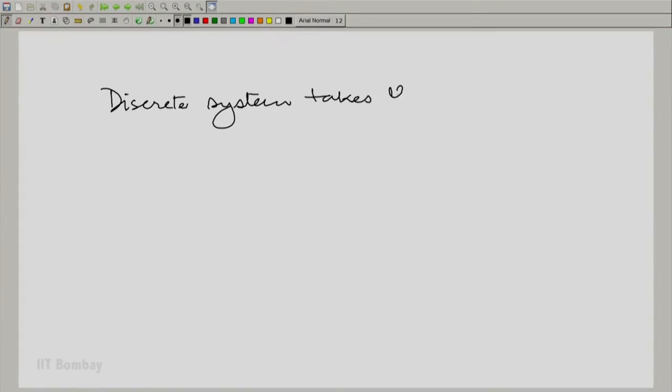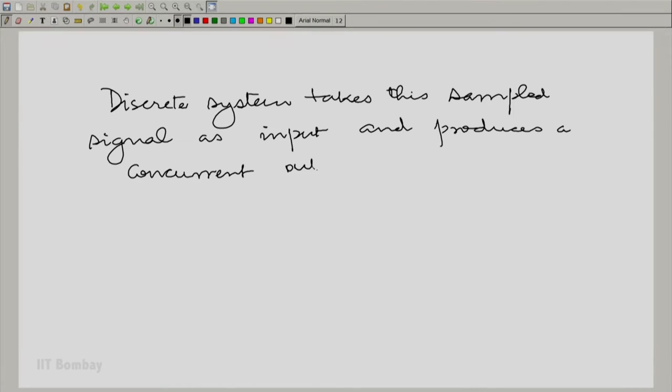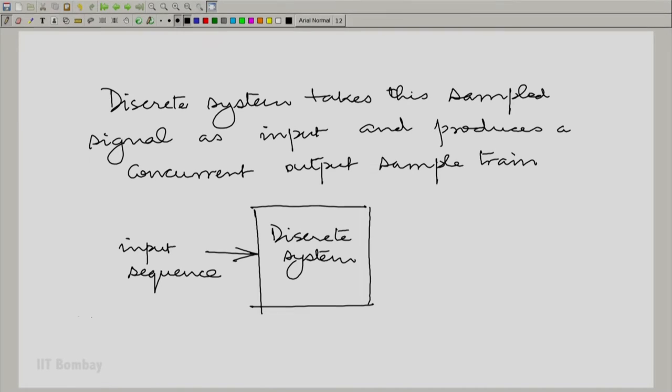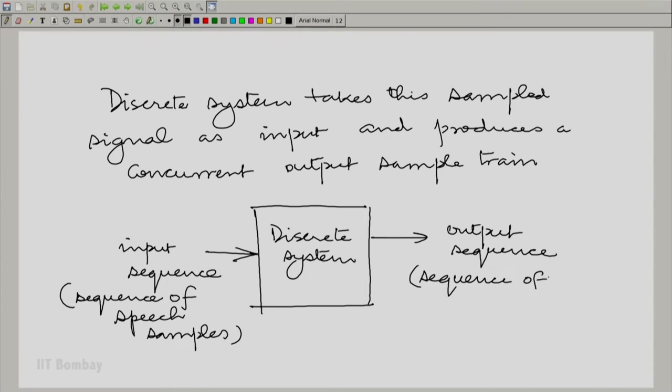So, I have this spectrum of the sample signal. I have a stream of samples coming. I operate a discrete system on them. And now, let me recall how I understood discrete systems. How do I describe discrete systems? The discrete system takes the sample signal as input and produces a concurrent output train. What is the input sequence here? The sequence of speech samples. It produces an output sequence. And this would again be a sequence of desired speech samples or processed speech samples.